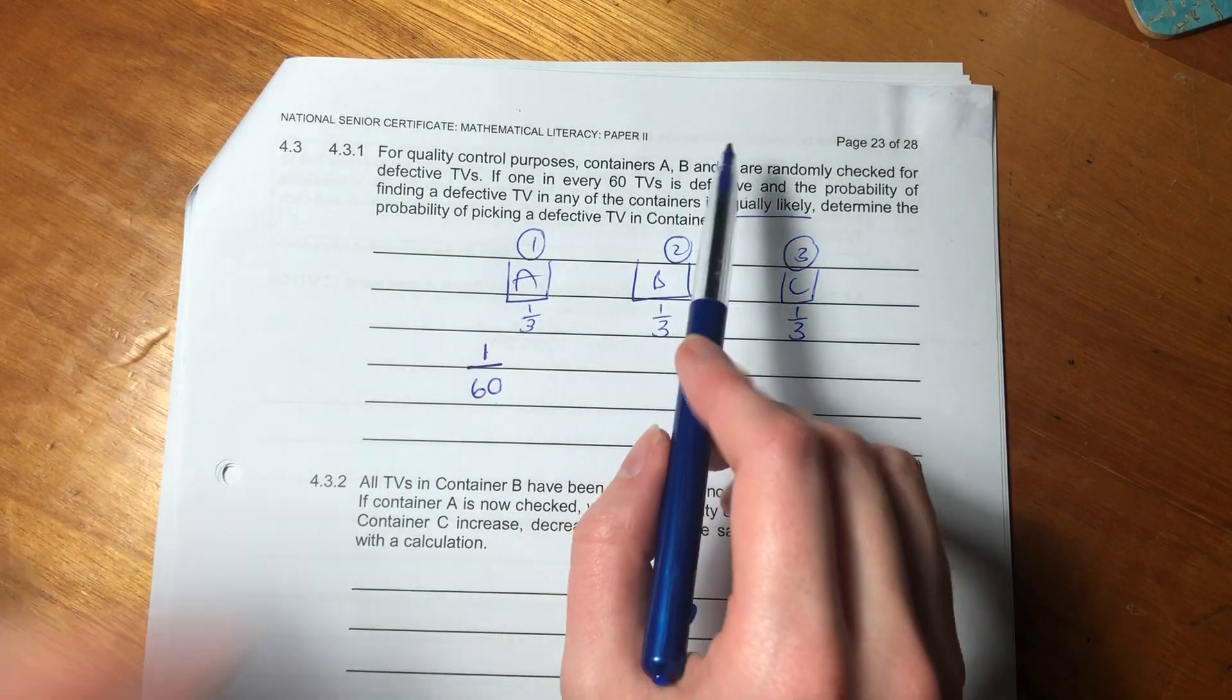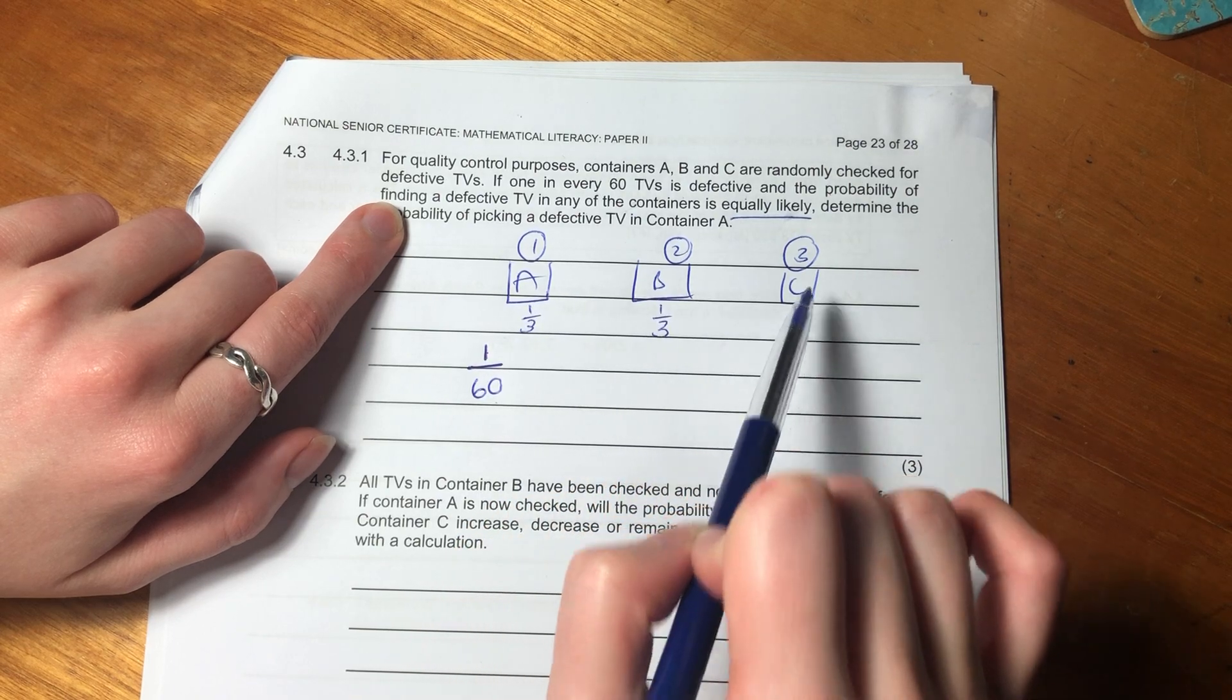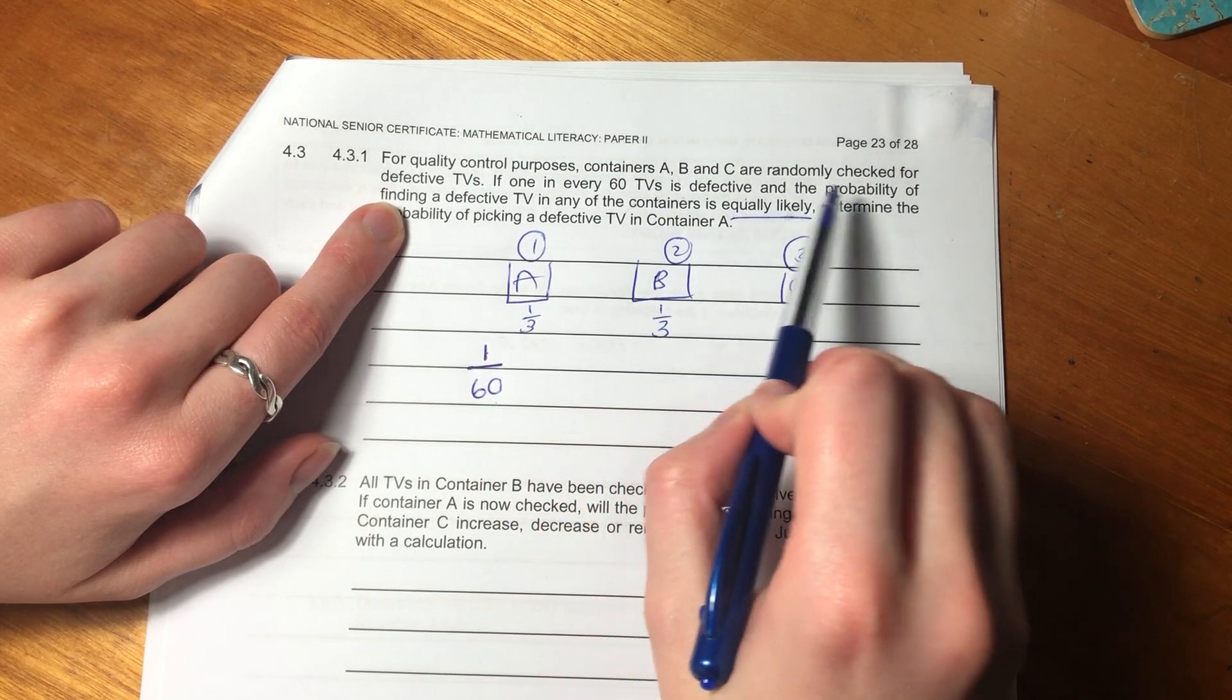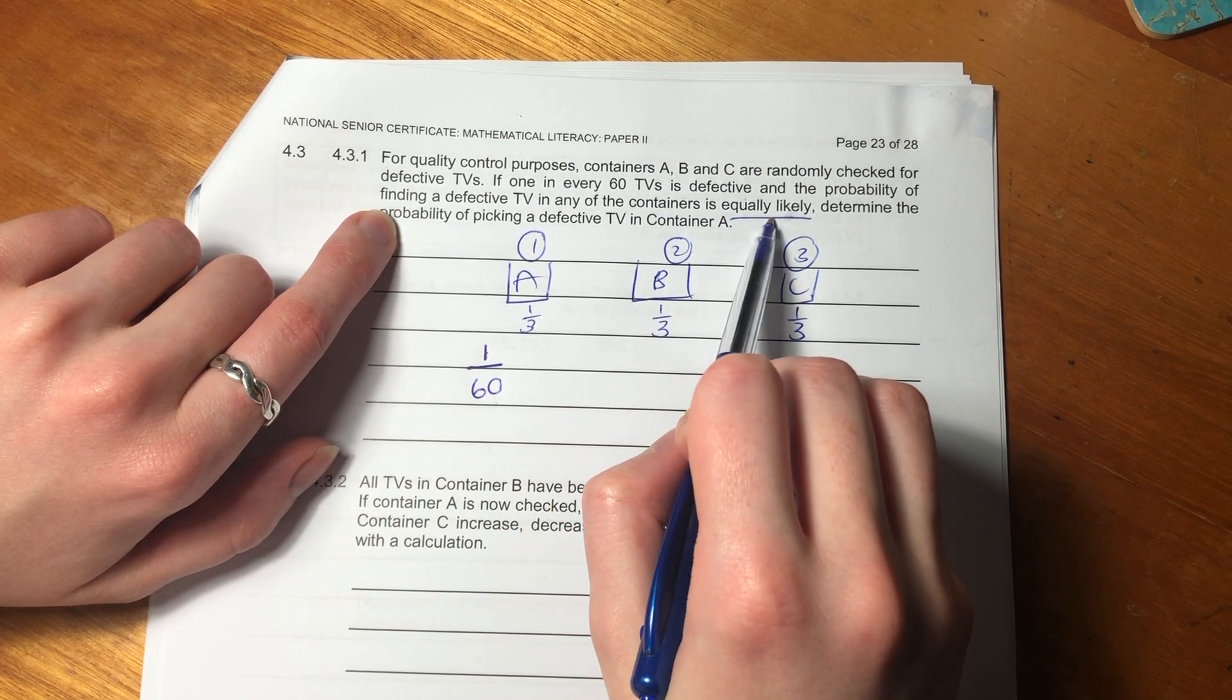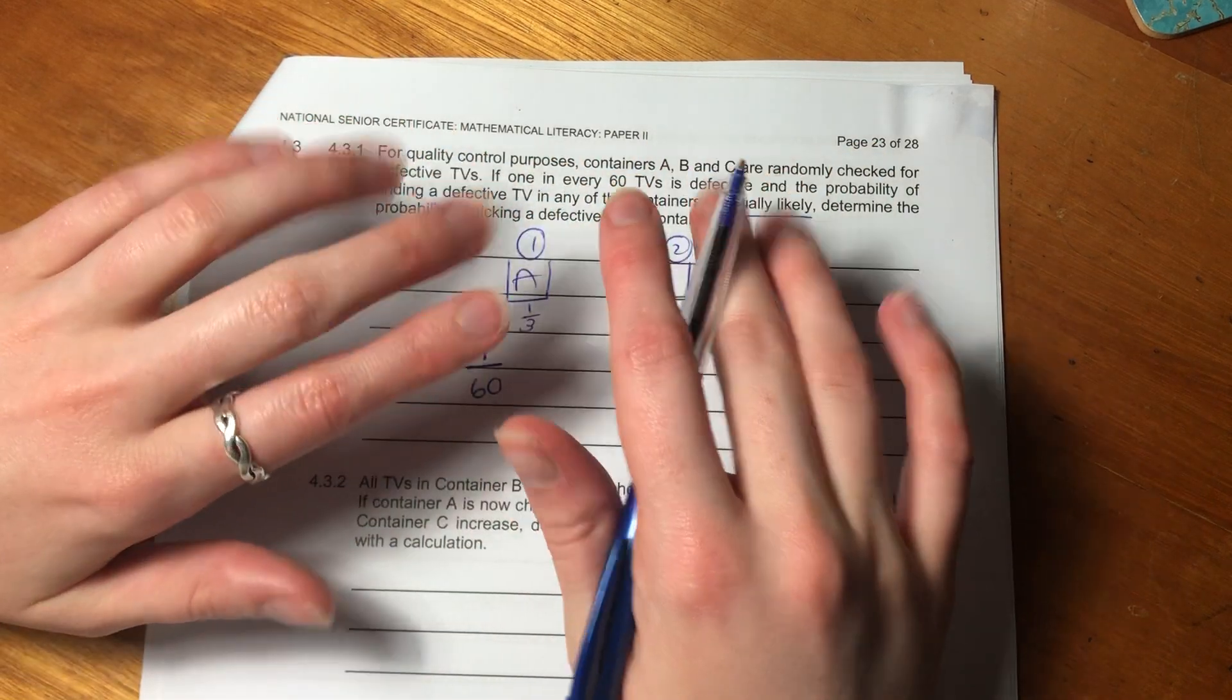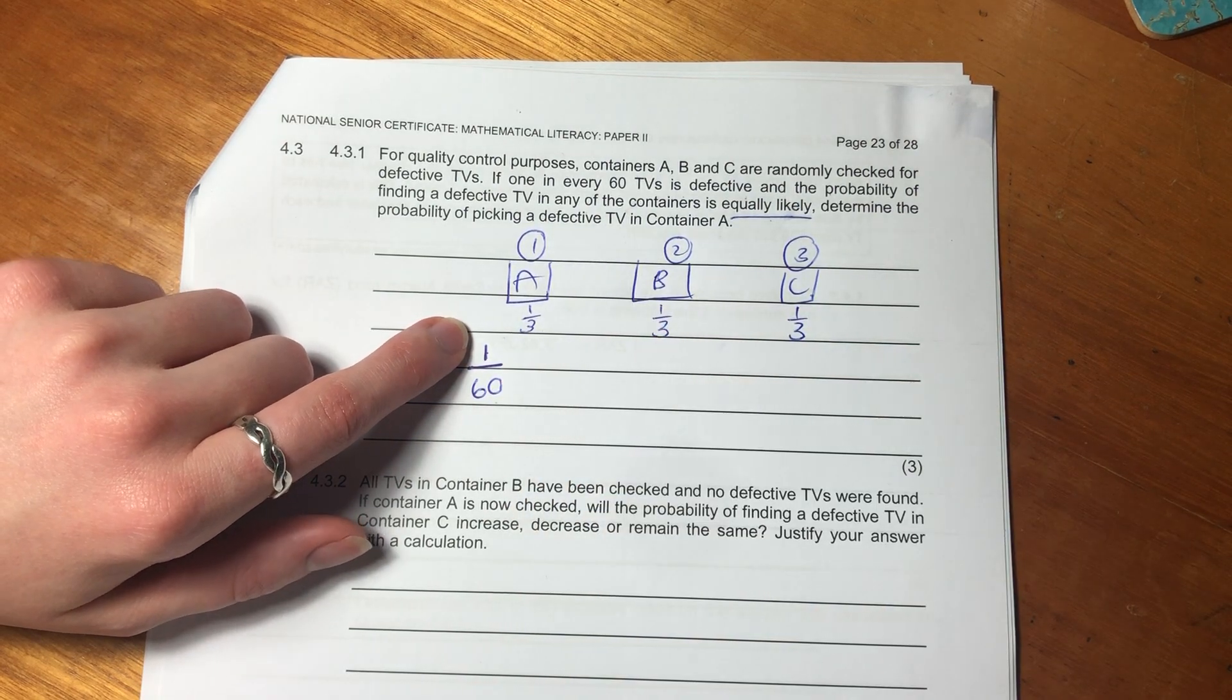For quality control purposes, containers A, B, and C are randomly checked for defective TVs. So I've drawn these containers. There's A, there's B, there's C. Granted, my drawings are not the greatest, but that is what I've done. Then it says, if one in every 60 TVs is defective and the probability of finding a defective TV in any of the containers is equally likely. So it's not saying all the defective TVs are put into C or in A or in B. It's saying basically the defective TVs, you're equally likely to find one in A, B, and C.